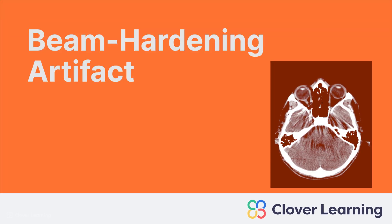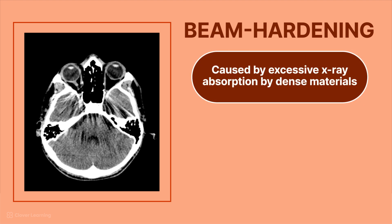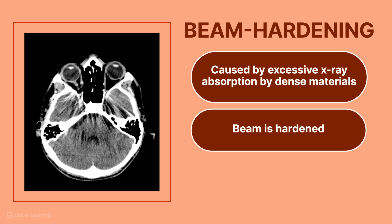Welcome back. This CT artifact lesson is about beam hardening. The hardness of the X-ray beam refers to the average energy of the X-ray photons, and beam hardening refers to an increase in that average energy. It's caused by an excessive amount of X-ray absorption by very dense materials in the body, which literally hardens or increases the energy of the beam.